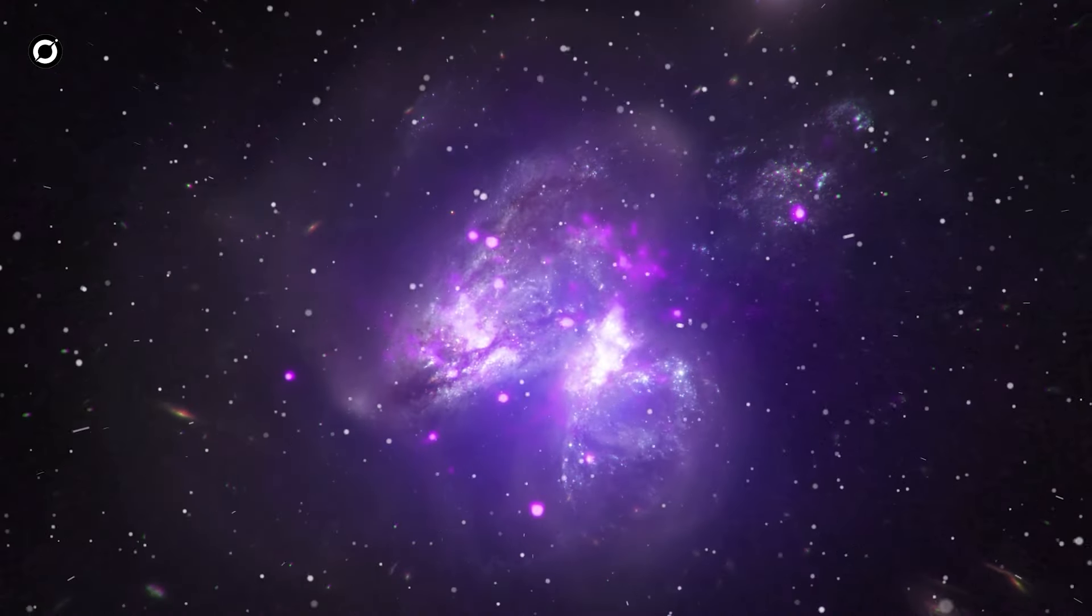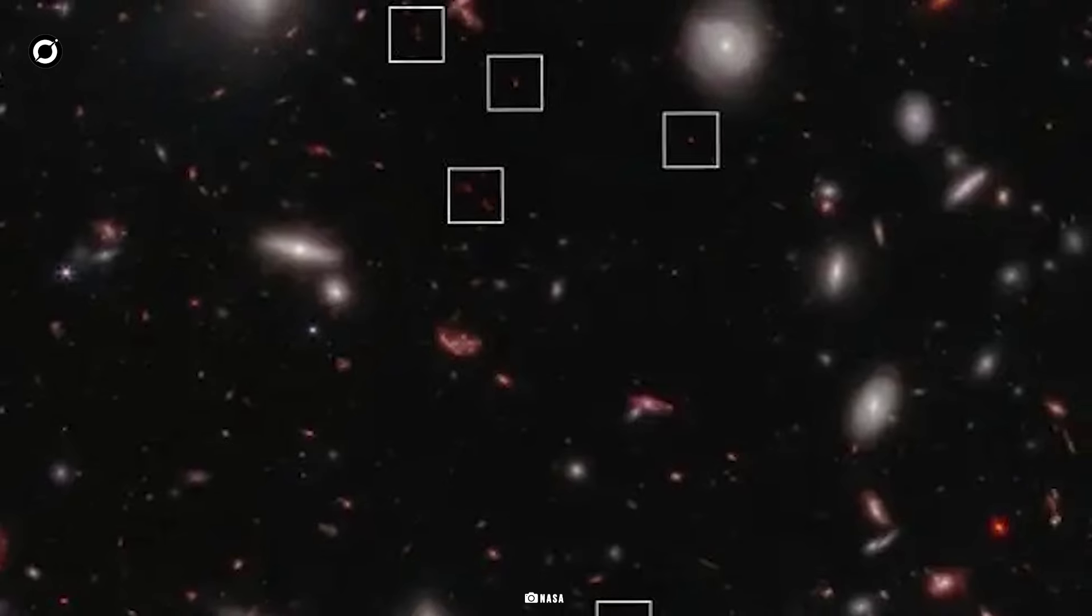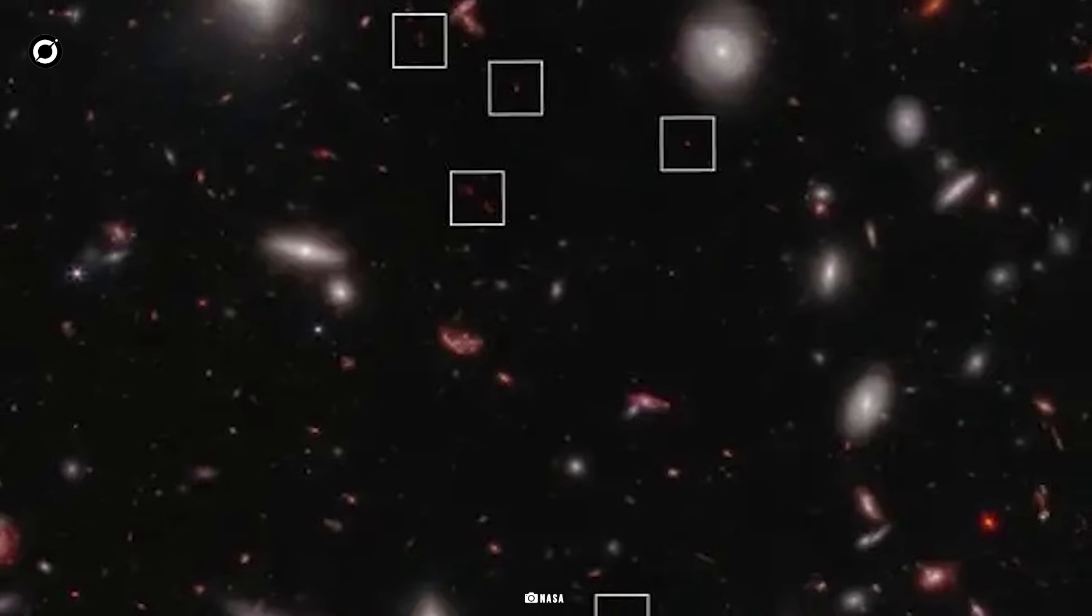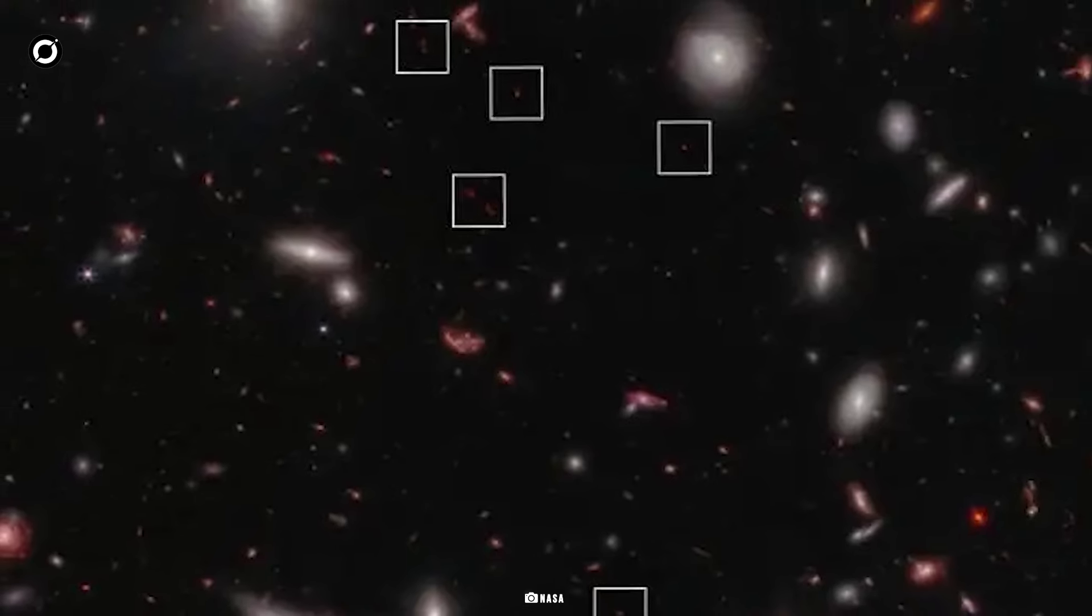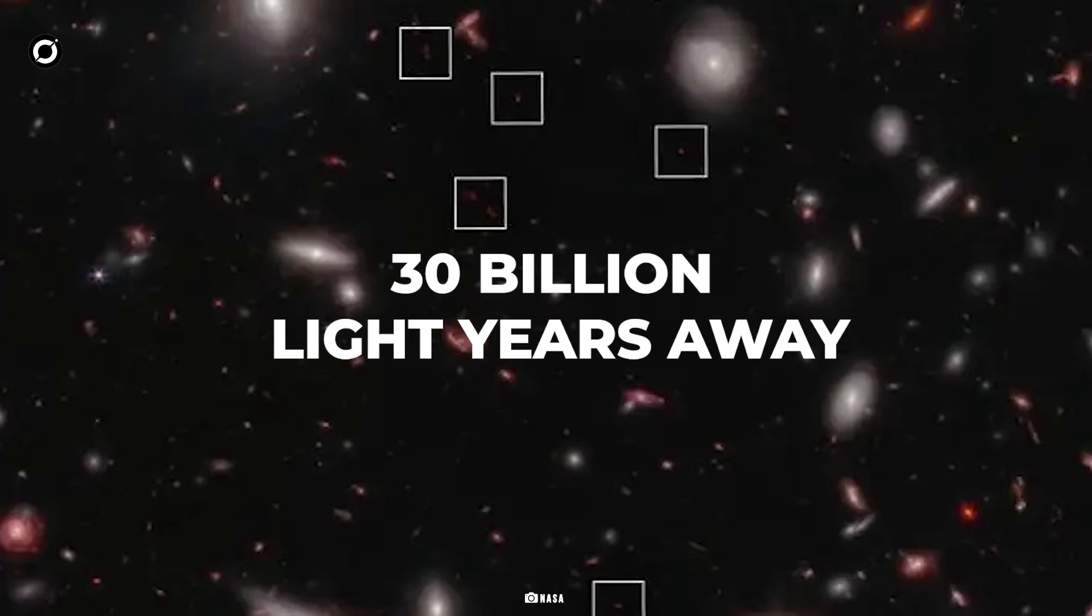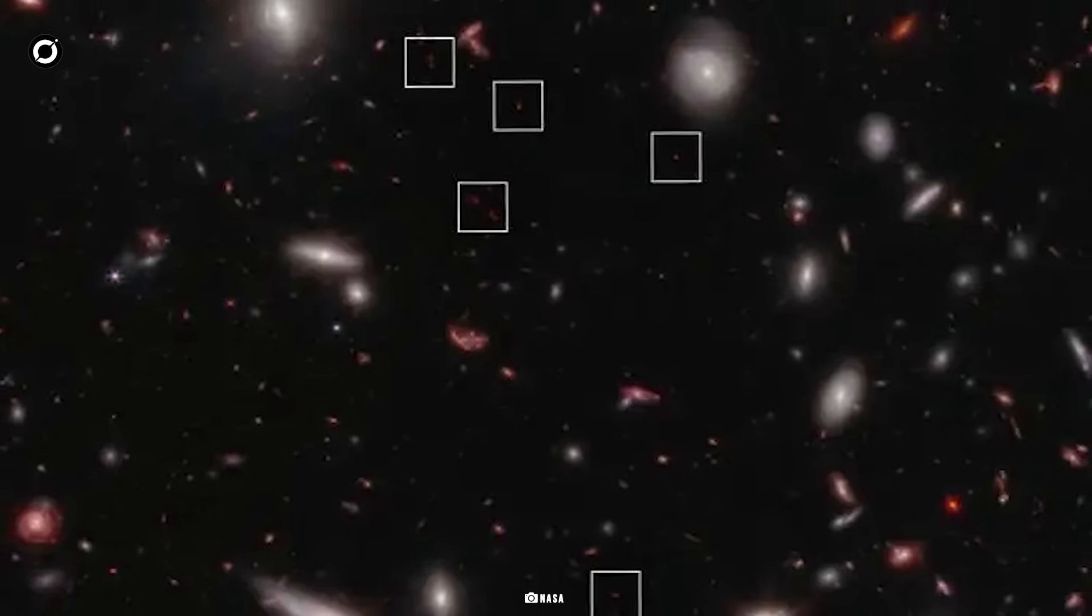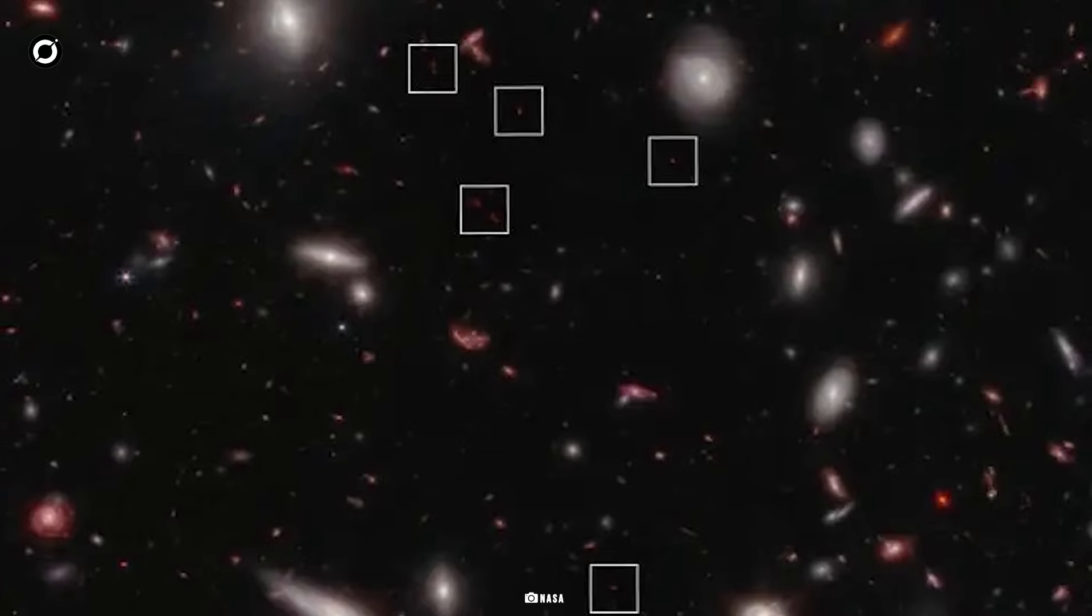Continuing on its streak of making discoveries that question the Big Bang, the James Webb Space Telescope has found the most distant galaxy cluster ever seen at 30 billion light years away. Researchers say it's probably one of the biggest clusters in the universe by now.